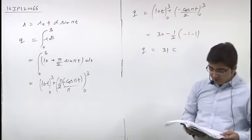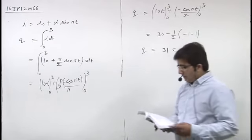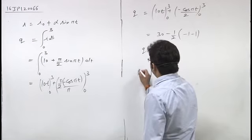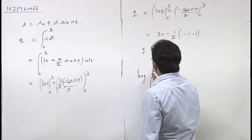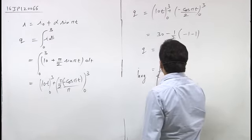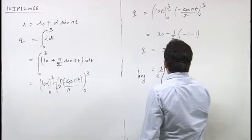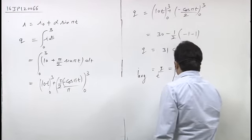Next it asks for average current for that interval. Average current equals total charge upon total time, so 31 by 3 amperes. This is the answer.